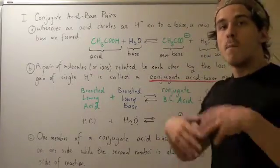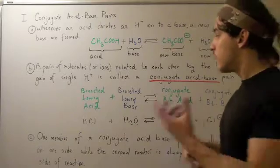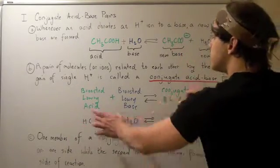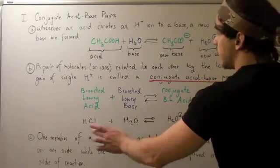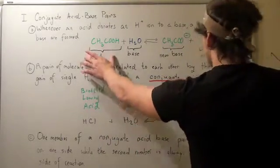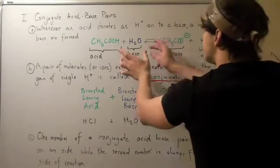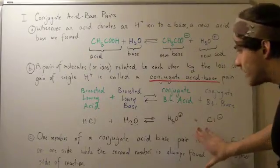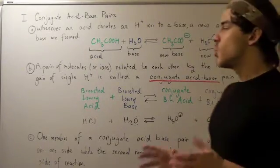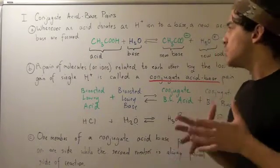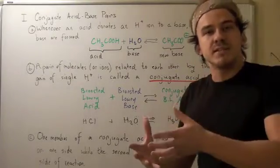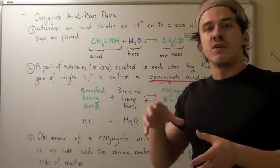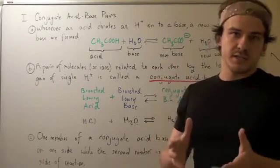Notice that one member of a conjugate acid-base pair is always found on one side of the equation, while the second member is always found on the other side — you'll never find both members on the same side. So if someone asks you to find the conjugate base of an acid, you simply remove an H-ion from that acid, and that gives you the conjugate base.